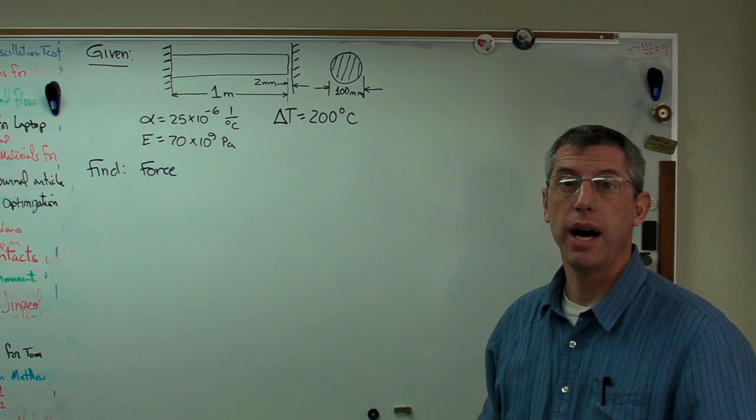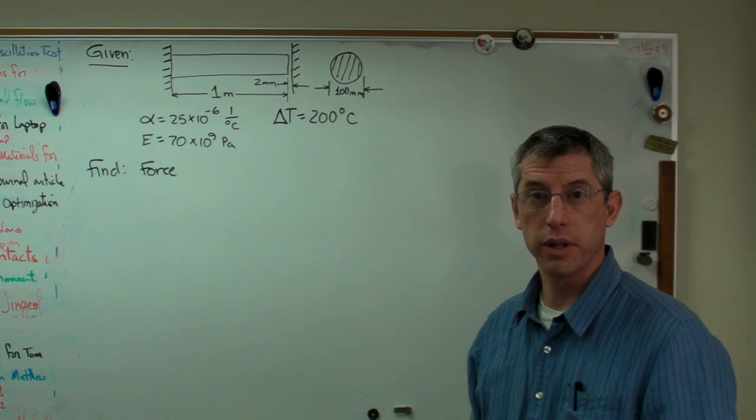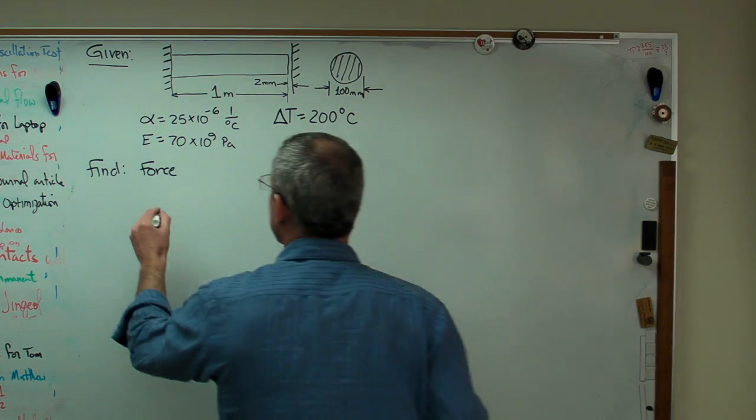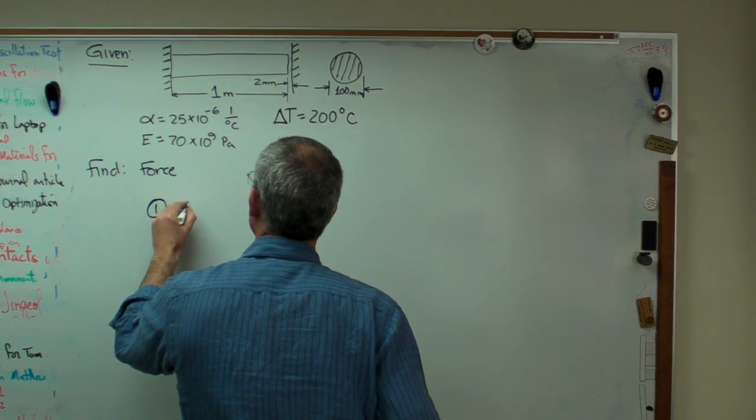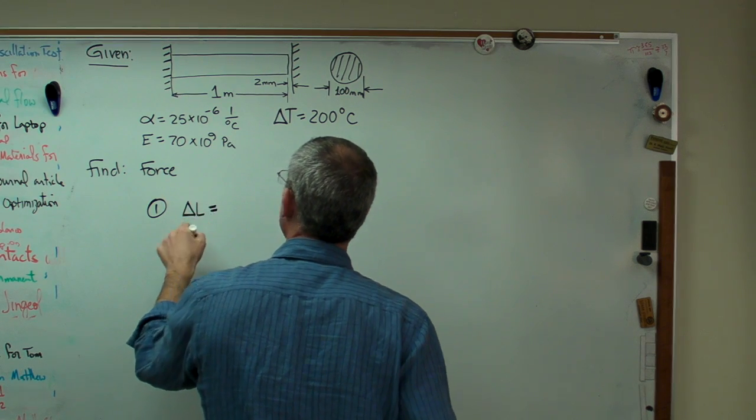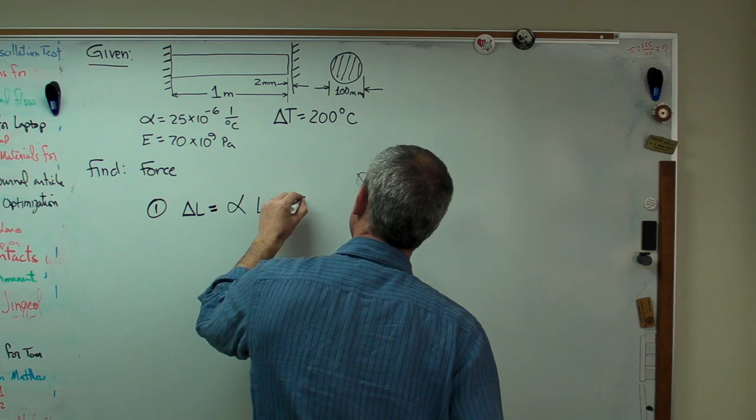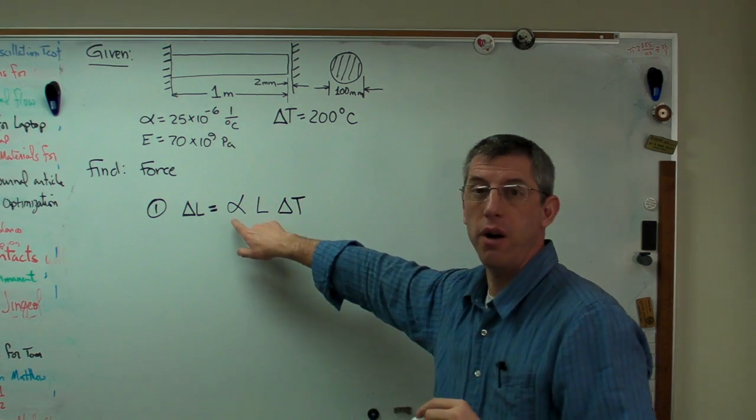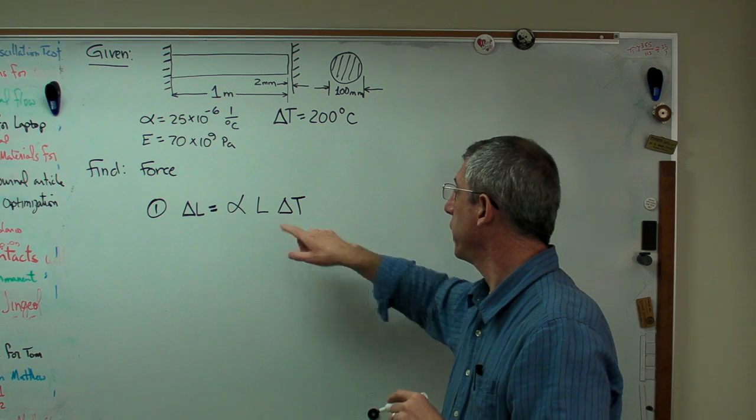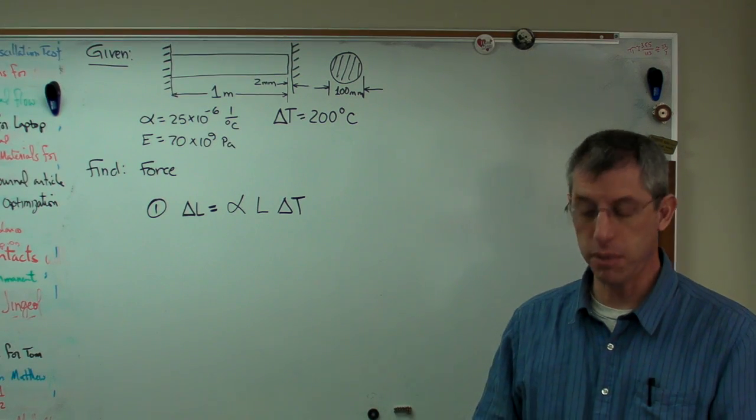Let's start by finding how much the bar will expand without the barrier. The expression for change in length is alpha L delta T, where alpha is the coefficient of thermal expansion, L is length, and delta T is the change in temperature.